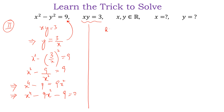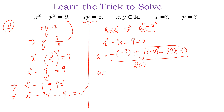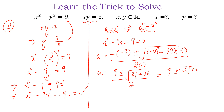Now we do a substitution: let a equal x squared, so a squared equals x to the power 4. Substituting into the equation gives a squared minus 9a minus 9 equals 0, which is a quadratic equation. Using the quadratic formula, a equals (9 plus or minus the square root of 81 plus 36) divided by 2, which simplifies to a equals (9 plus or minus 3 root 13) divided by 2.